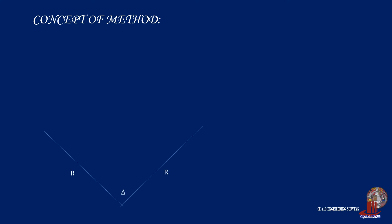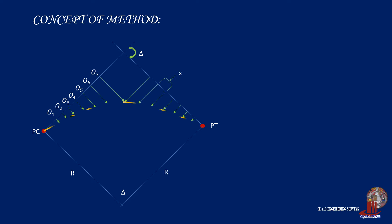In the perpendicular offset method, one has to know the length of the tangent line in order to take regular intervals from it to trace the curve. Given the values of the radius of curvature R and the central angle delta, the tangent line can be computed. From T, set regular intervals to draw distances which would trace the curve.